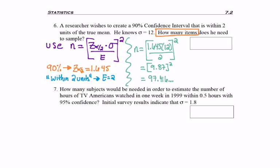When I square that, I get 97.416. But remember, we always bump to the next whole number, which would be 98. And so my answer is 98 items need to be sampled.